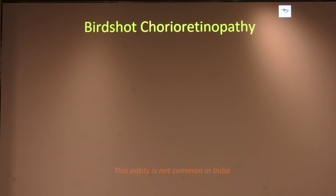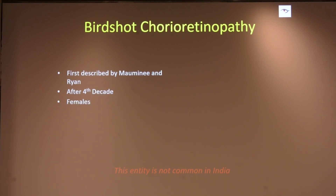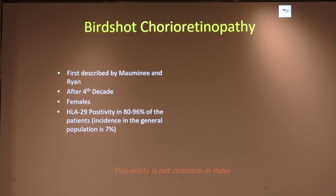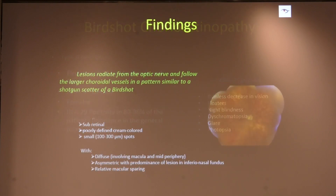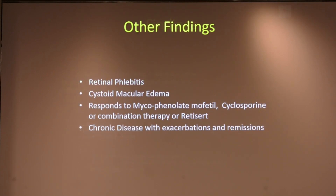Bird shot chorioretinopathy is not common in India and is usually seen in the fourth decade in females. It has HLA-A29 positivity in about 96% of cases, though HLA-A29 positivity does not translate to disease incidence in the general population — the vice versa doesn't happen. Since these are rarely seen, I won't go into much detail, but most of these cases need immunomodulatory medications as a first line of treatment.